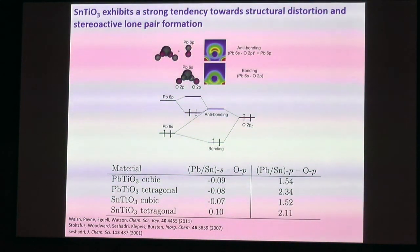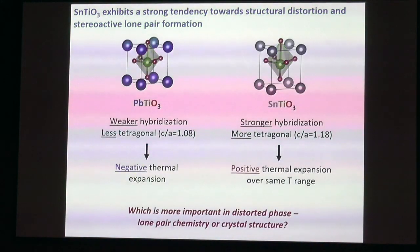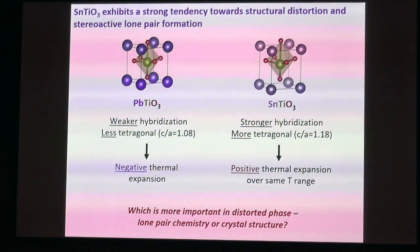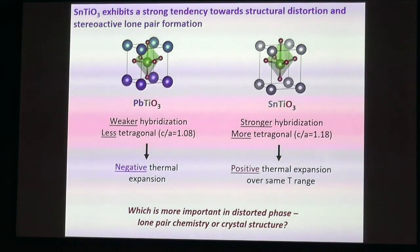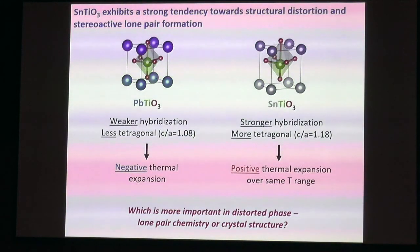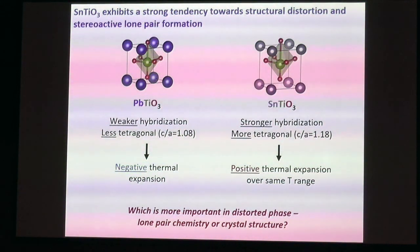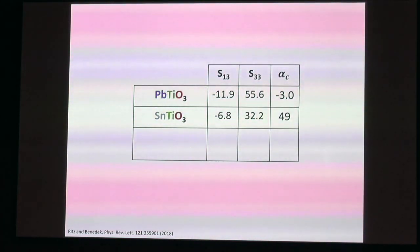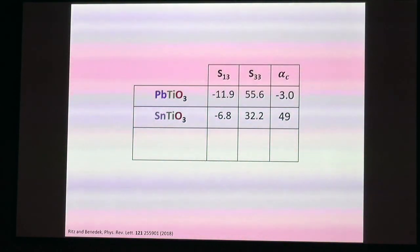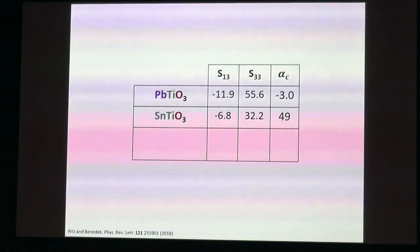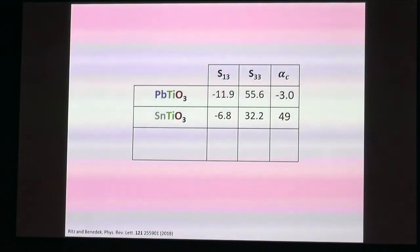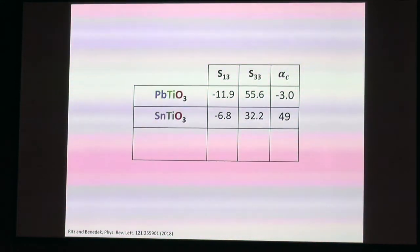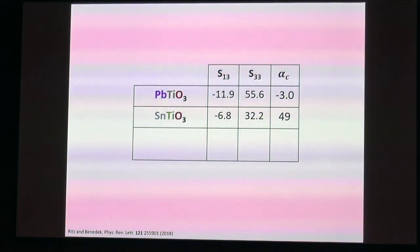We performed a crystal orbital Hamiltonian population (COHP) analysis for both lead titanate and tin titanate in the cubic and tetragonal phases. In lead titanate, going from cubic to tetragonal, the s–O–p interaction becomes slightly less anti-bonding. In tin titanate, it goes from anti-bonding in the cubic phase to bonding in the tetragonal phase. The Sn 5s states are closer in energy to the O p-states than the Pb 6s states, so the interaction is stronger, yielding a larger structural distortion.